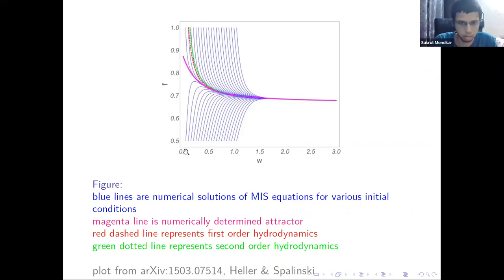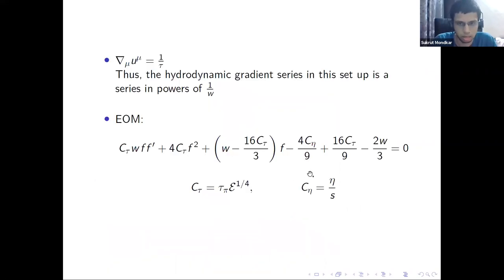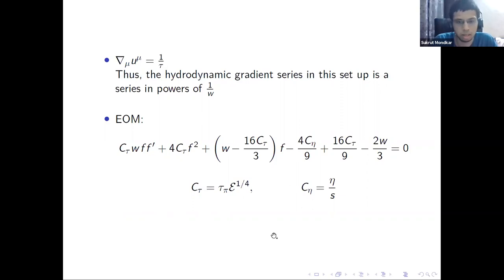This attractor curve can be obtained as follows. At early times w=0, substituting into this equation gives only a quadratic equation in f — the derivative term vanishes. It has two solutions: one is a repulsor, where different initial conditions starting near it diverge, and the other is a solution where all different initial conditions converge.